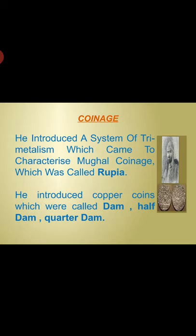Sher Shah Suri is also famous for his coinage. He introduced a system of tri-metallism which came to characterize Mughal coinage, with the silver coin called Rupiah. He also introduced copper coins called Dham, Half Dham, and Quarter Dham.